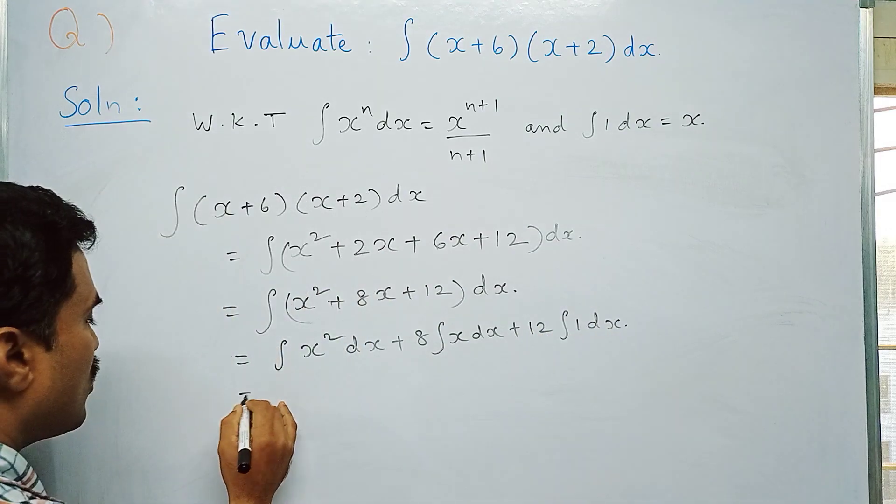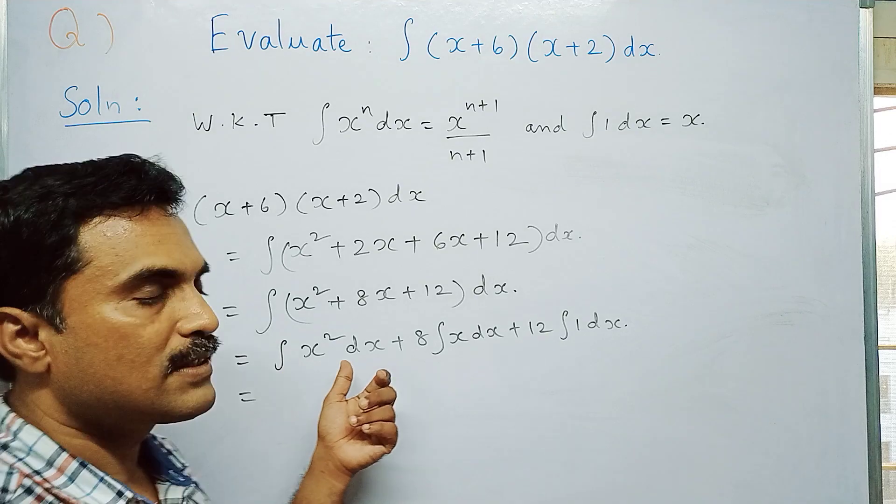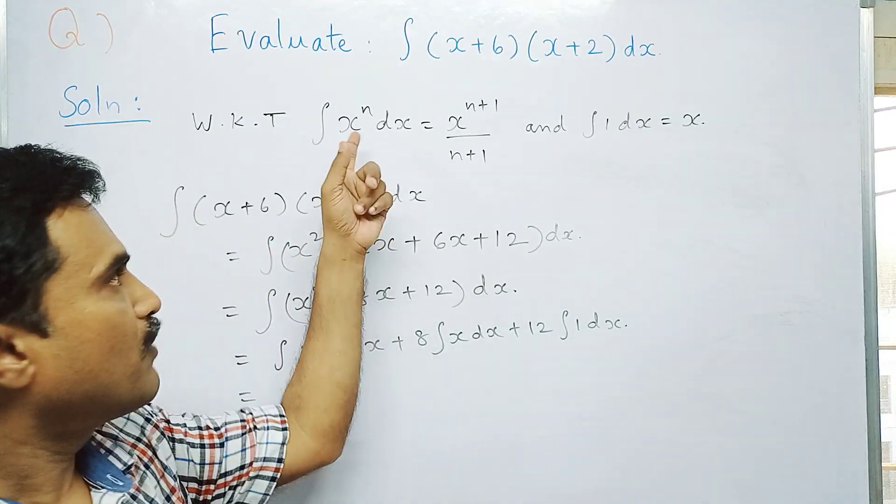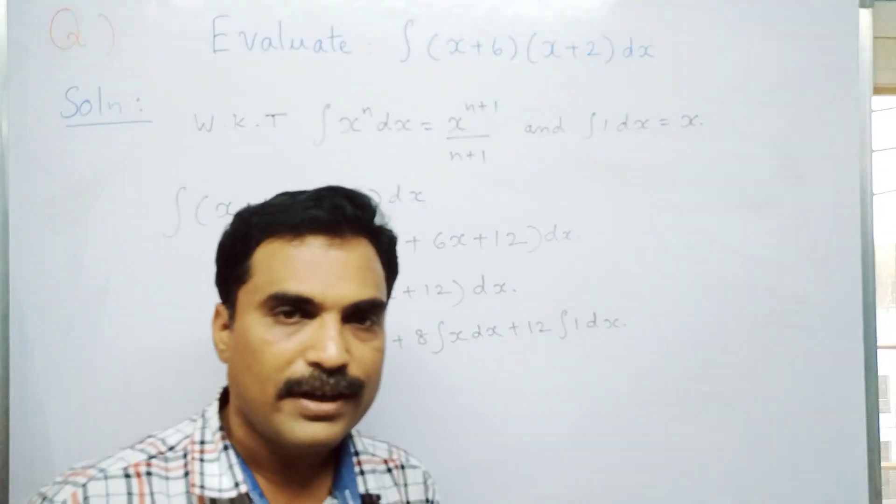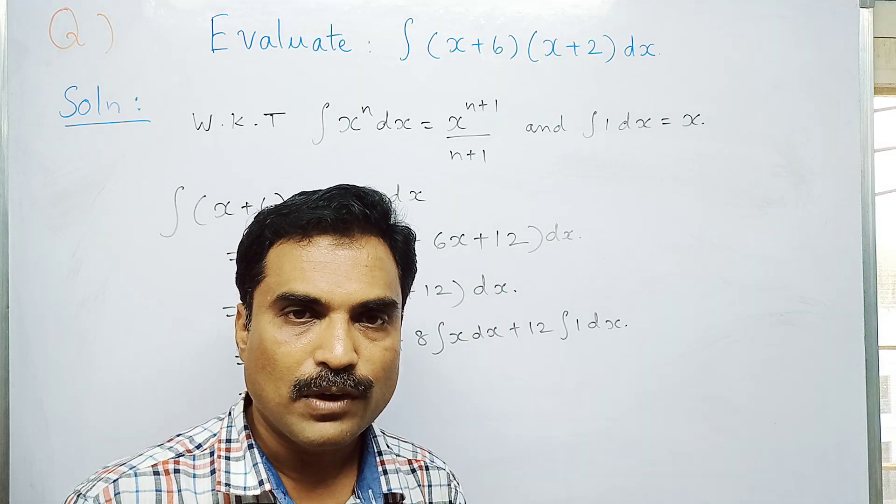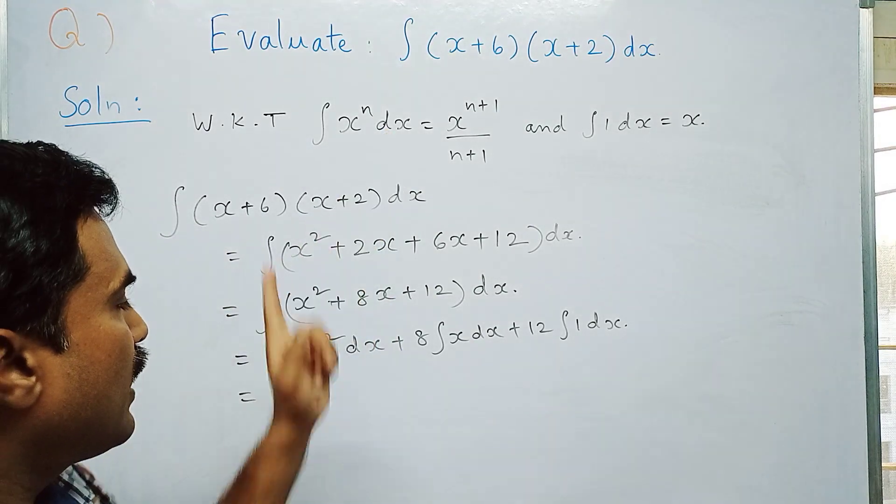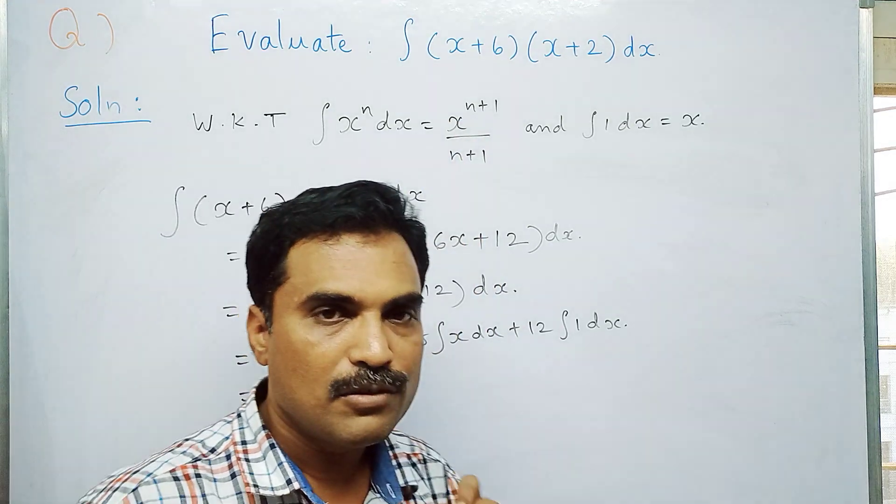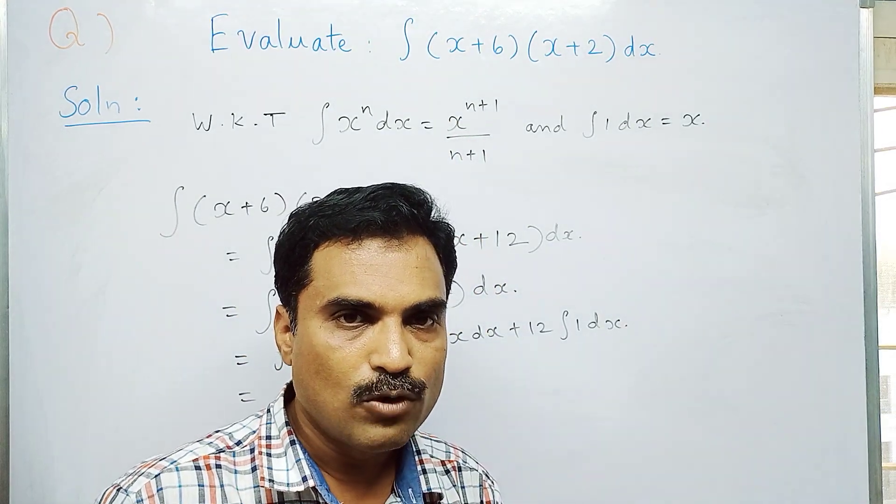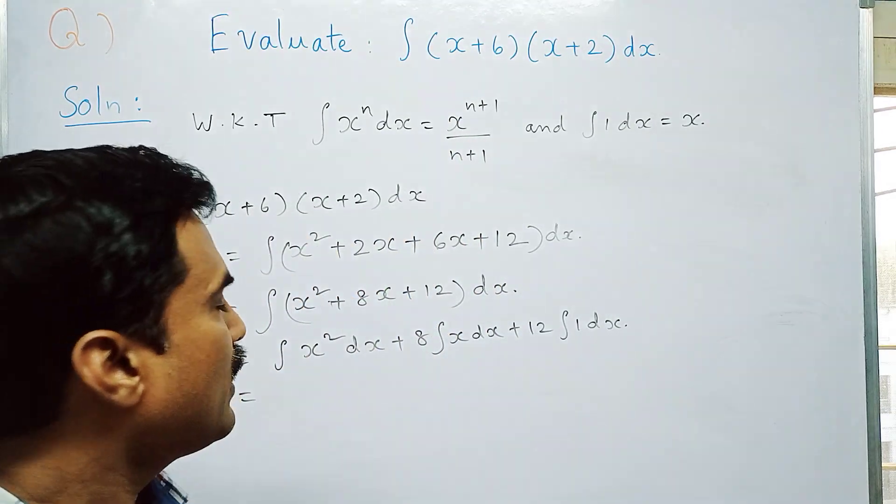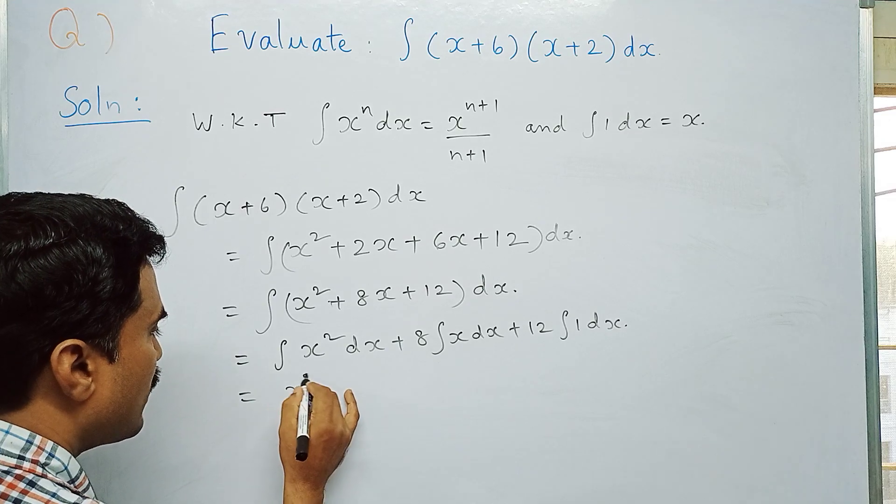Now apply: what is integral x² dx? For this you apply the first formula, integral x^n dx is x^(n+1)/(n+1). Here n value is 2, so right hand side will be x^(2+1)/(2+1), which gives x³/3. So first one is x³/3.